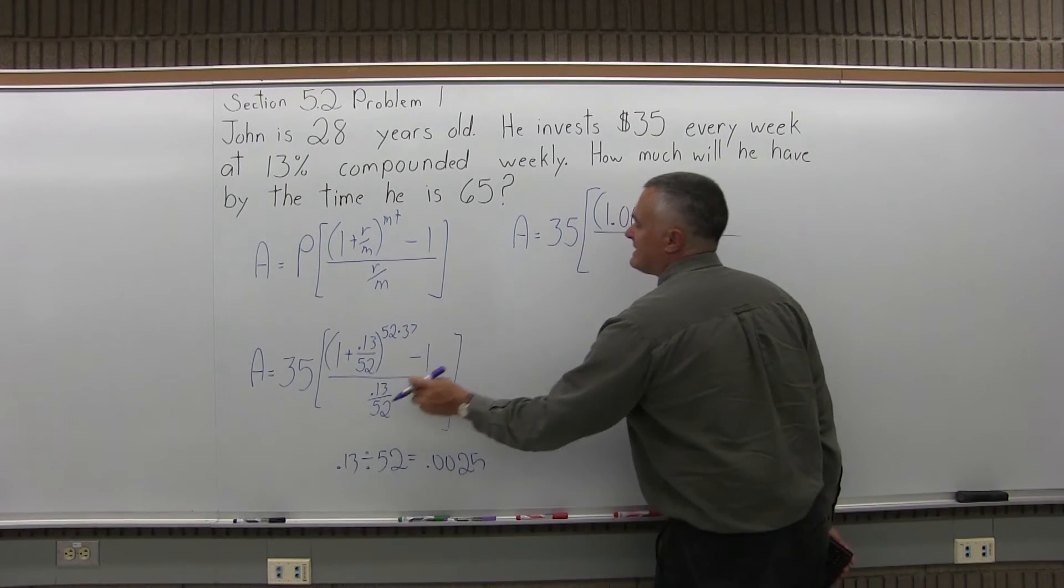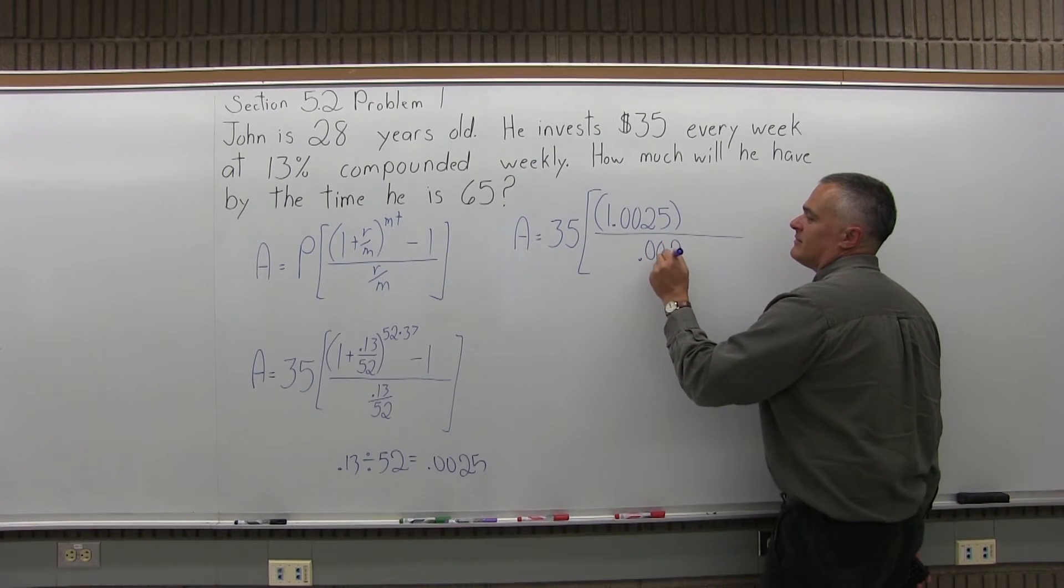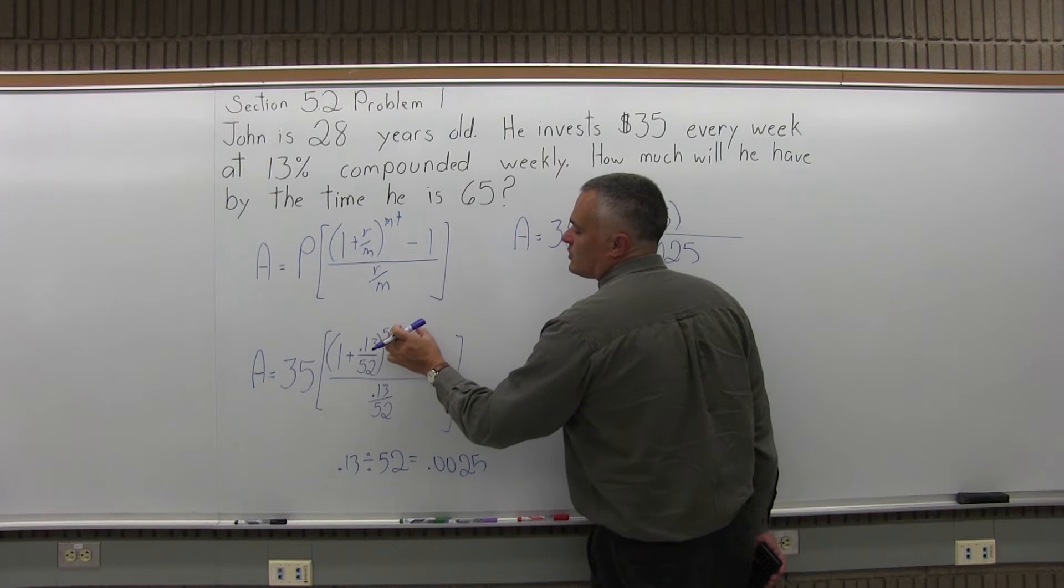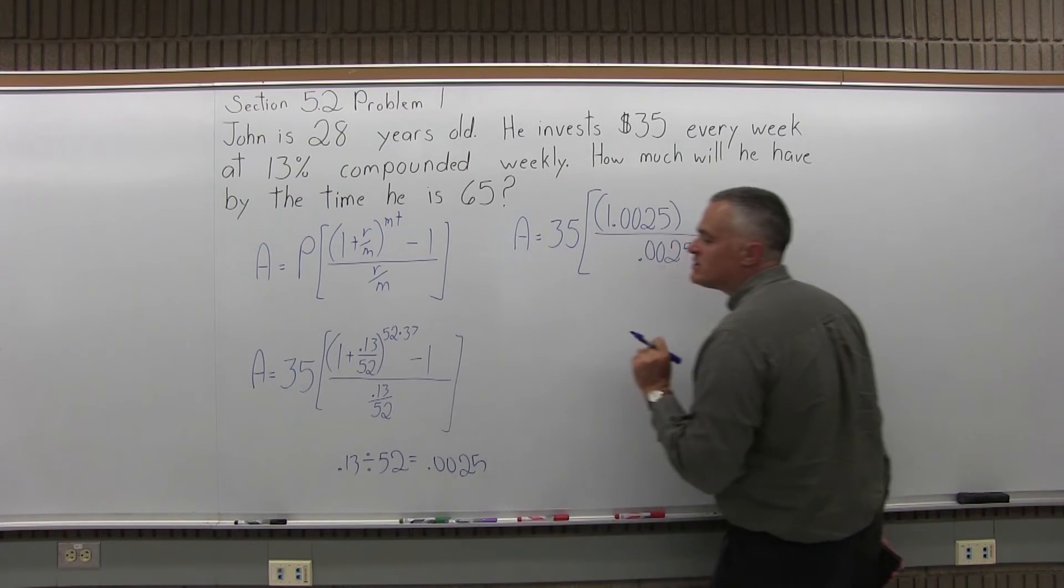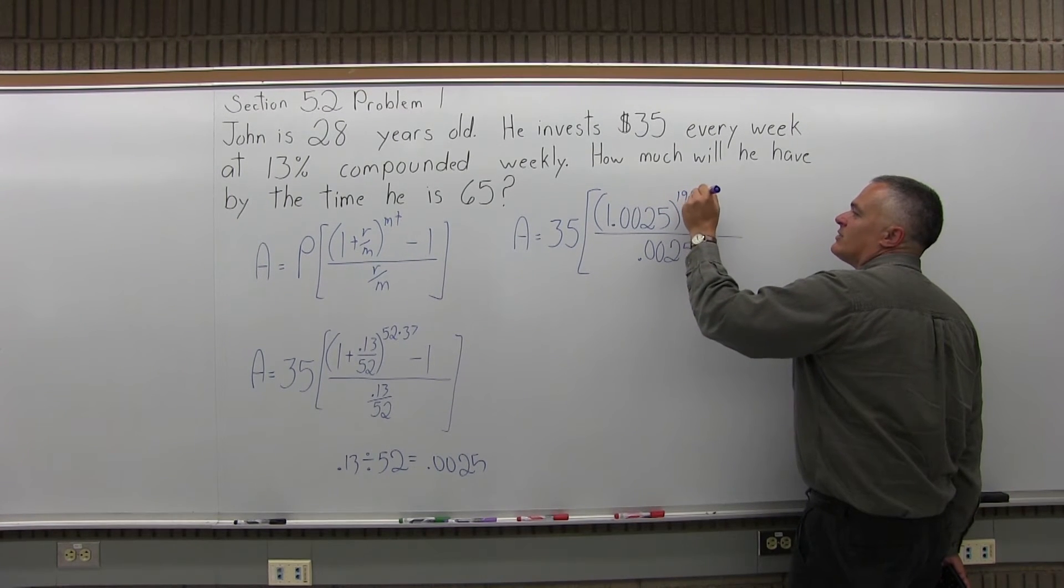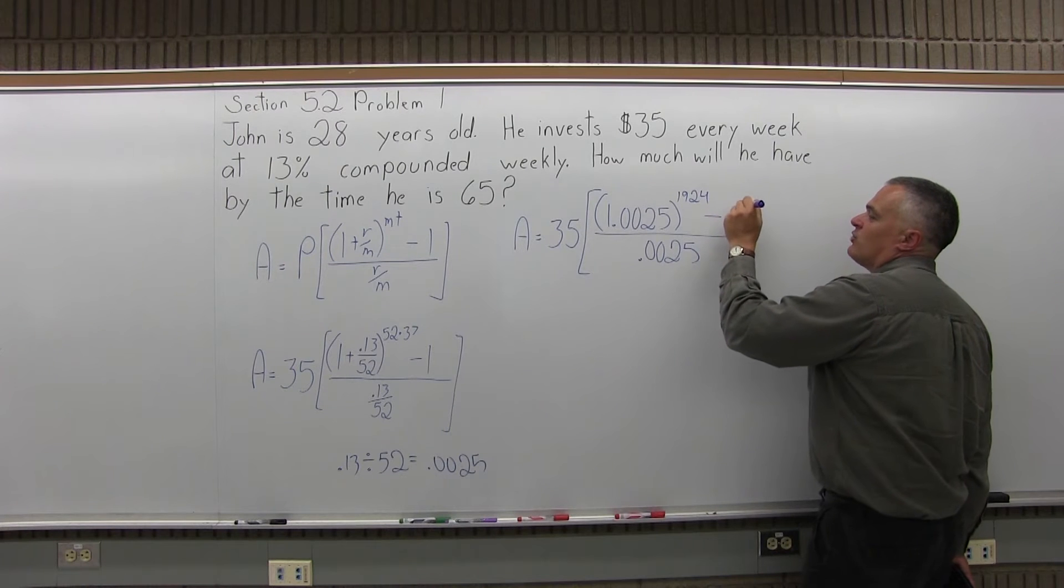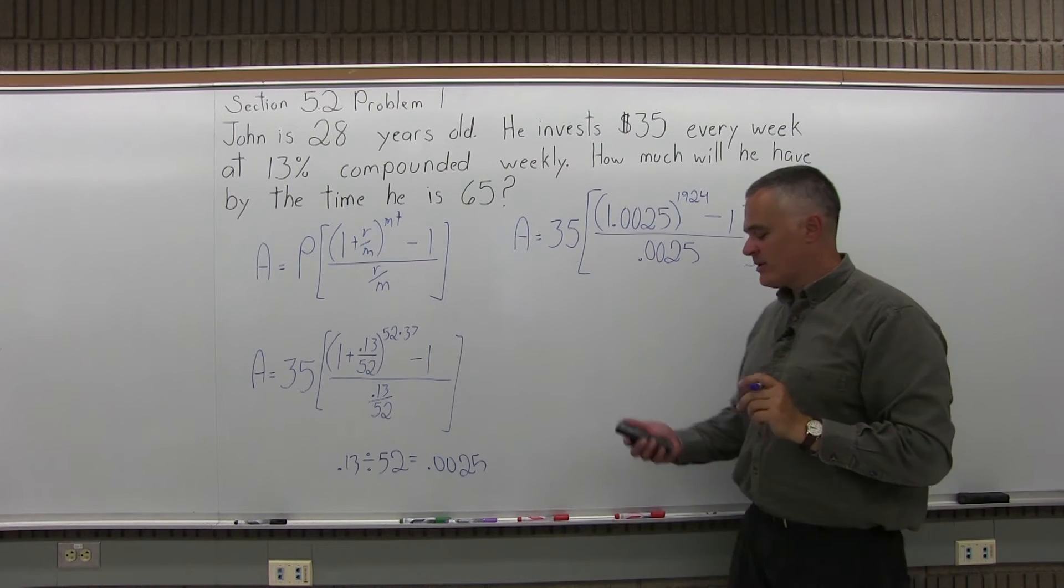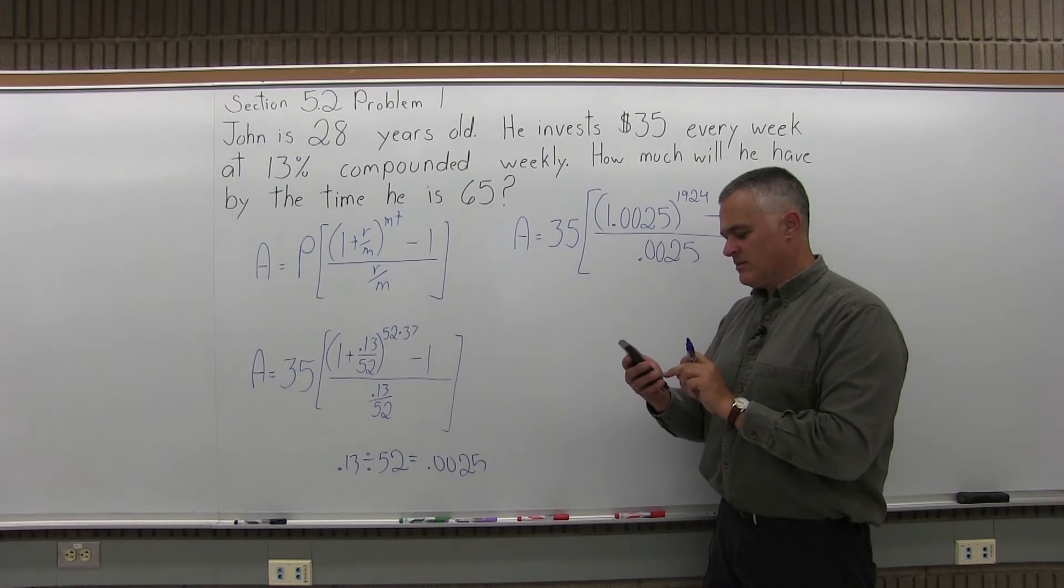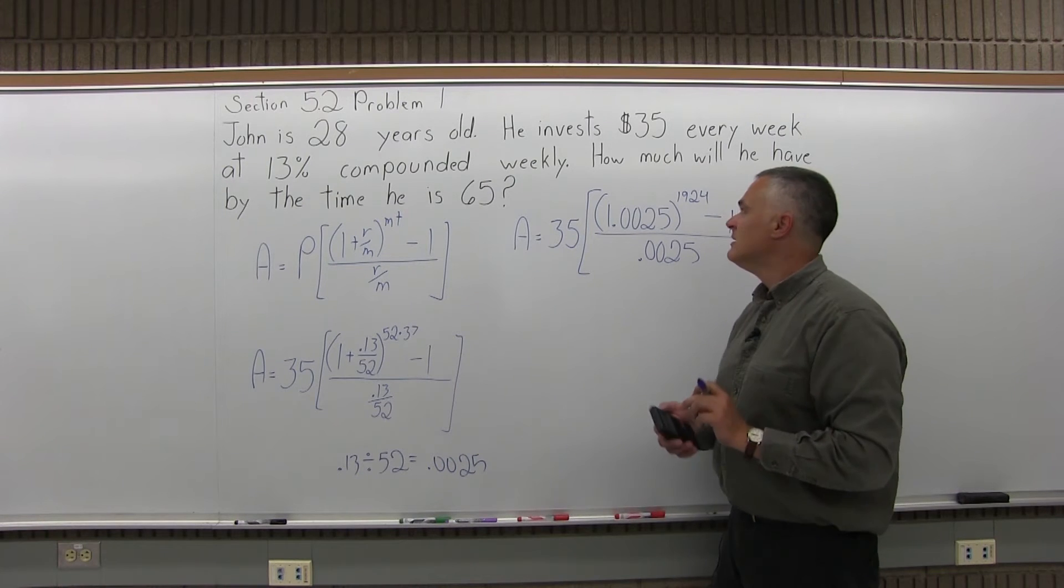And again, notice you're going to have the same decimal in the denominator, but without the 1 in front of it. And now the parentheses will have an exponent, 52 times 37. If I'm doing my math right, I think it's 1,924, that I'll definitely check. And there's a minus 1 at the end. So before I go any further, let me do 52 times 37, yeah, 1924.